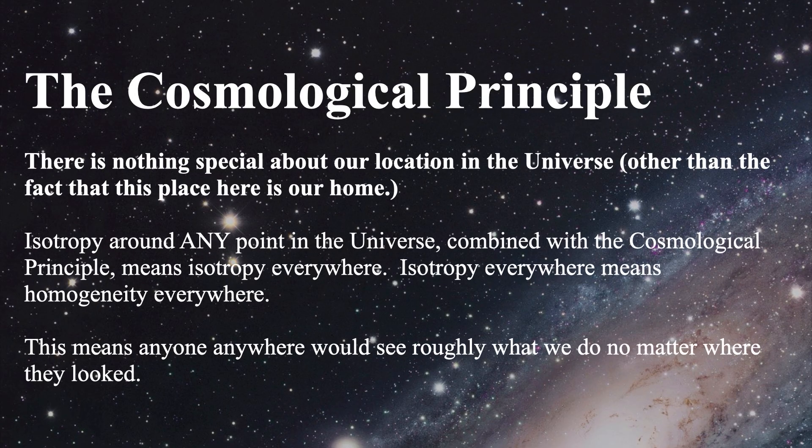Our first important thing relating to that number zero is called the cosmological principle. There's really nothing special about any place in our location of the universe, except for the fact that it's our place and it's our home. The underlying idea of the cosmological principle is that the laws of physics are the same everywhere in the entire universe. It's a principle borne out by observations.